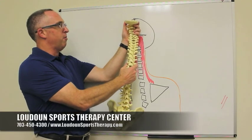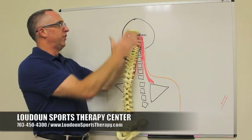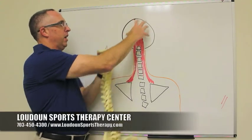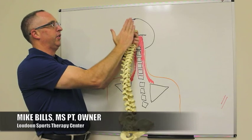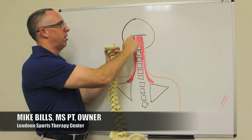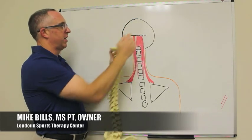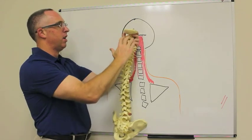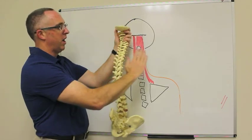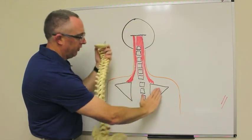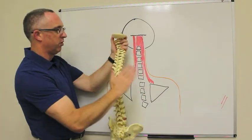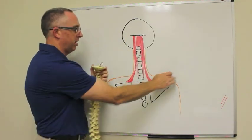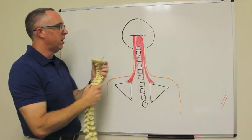If we're looking at yourself from behind, this is the back of your head, and this is the base of your skull — this black jagged line right here. You would have your shoulder blades on each side and then your shoulders.